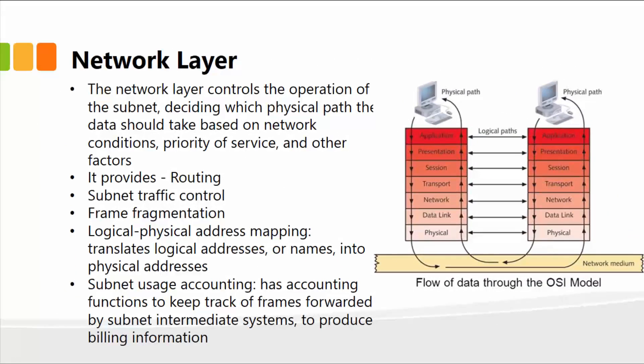Once the data is past the physical layer and the data link layer, the next is the network layer, which controls the operation of the subnet, deciding which physical path the data should take based on network conditions, priority of service, and other factors. It provides routing, subnet control, frame fragmentation, and logical physical address mapping.